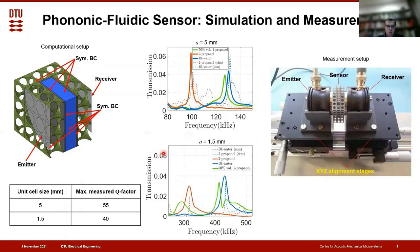Finally, here you can see our achieved results. First of all, we observe good agreement between our results in terms of resonance frequency. However, there is a mismatch between computed and measured transmission curves in terms of quality factors. Unfortunately, the sensor with a 1.5 mm unit cell size works worse because the measured quality factor is only 40 instead of the computed value of 220. We suppose this mismatch appeared due to curved cavity walls, and moreover our computational model does not include losses from the coupling between the ultrasonic transducer and the sensor. Thereby, our future work will include a systematic design study of phononic crystal lattice parameters and using methods of computational optimization to improve the design of the sensor.